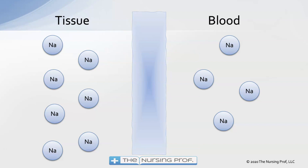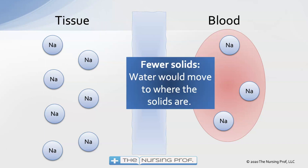If this is the tissue and the bloodstream with a membrane in between, we see movement of fluid — water moving from the blood into the tissues. Because there are fewer solutes on the blood side, water moves to the side where the solutes are.